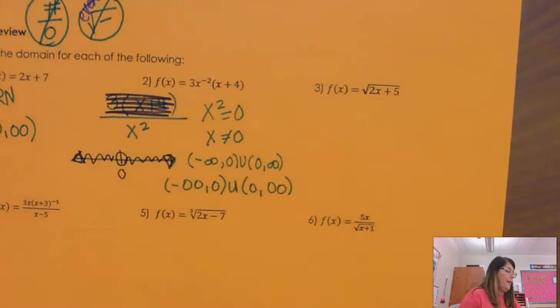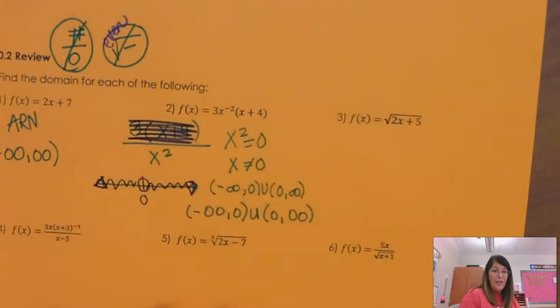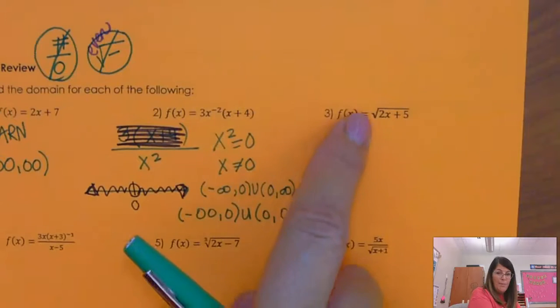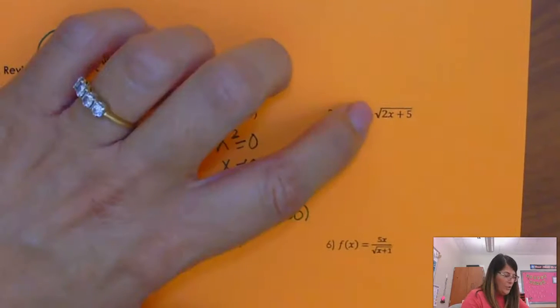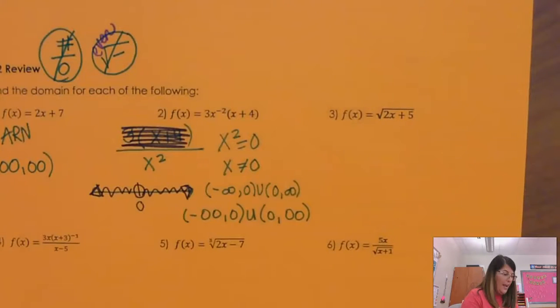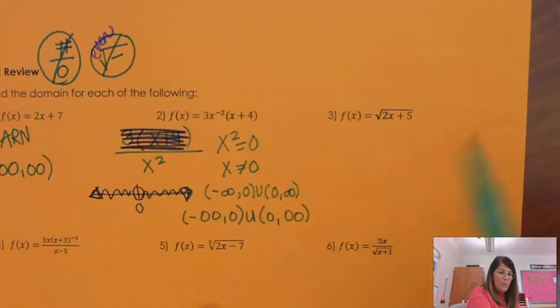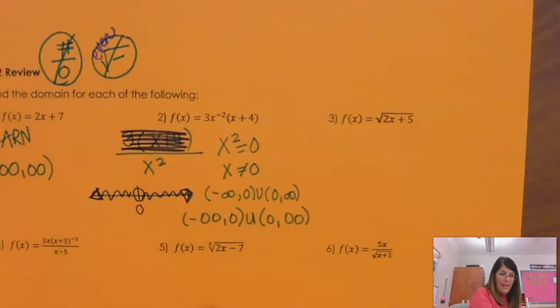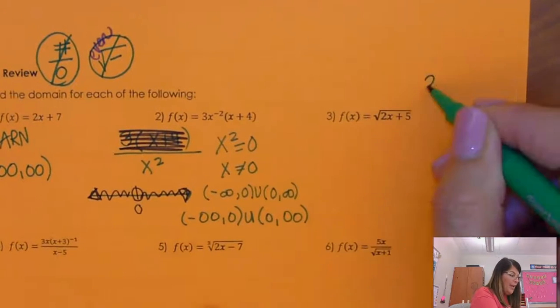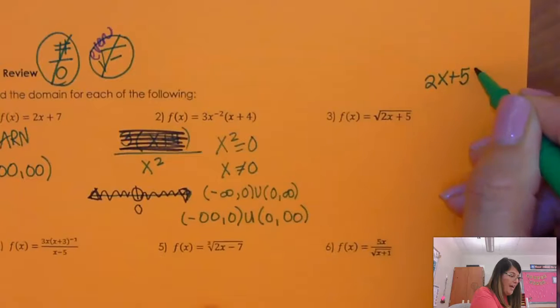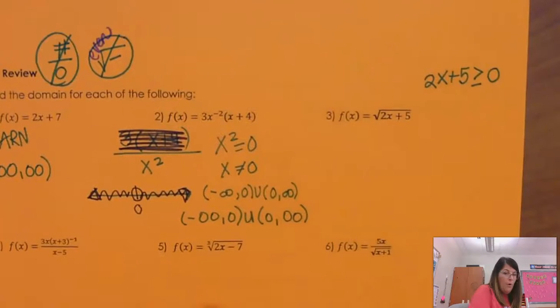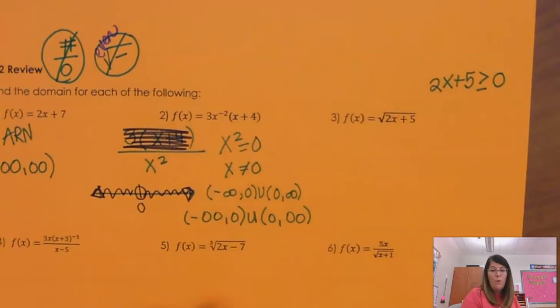All right. Look at problem number three. Now, I don't see a fraction, but I do see an even root. So remember when there's nothing there in the square root, that is a 2. All right? So I can't take a square root of a negative. This is the sin I'm paying attention to here. So I know 2x plus 5, it can be 0, but it's got to be 0 or bigger.